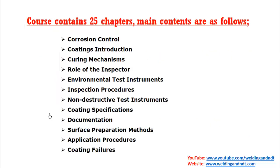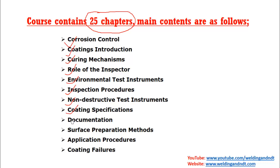In NACE Level 1, there are 25 chapters. The highlighted topics contained in those chapters are: corrosion control, coating introduction, curing mechanisms, role of the inspector, environmental conditions, test instruments, inspection procedures, non-destructive test instruments, coating specifications, documentation, surface preparation methods, application procedures, and coating failures. These are the main topics you will study during your NACE Level 1 course.